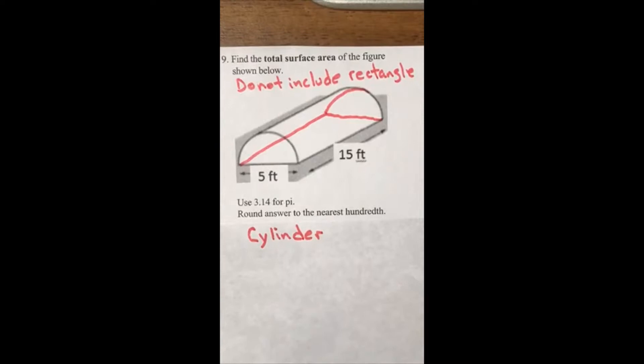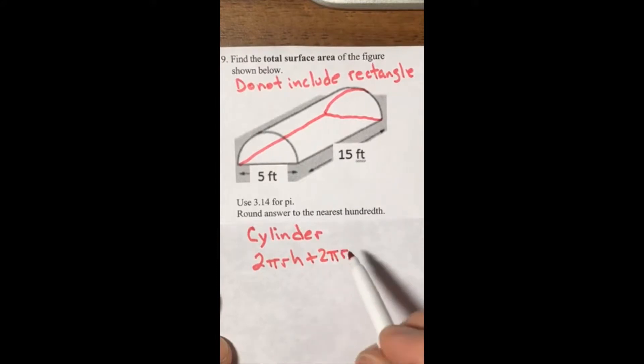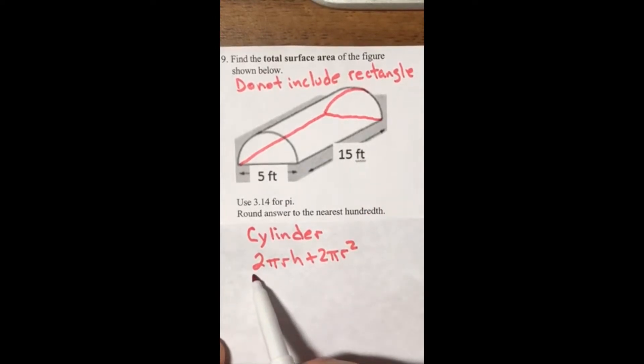And then the shape is turned on its side like this. Surface area of a cylinder is 2πrh + 2πr². And since we have to cut it in half, it's half of a cylinder, so let's go ahead and take the whole thing and divide by two. Now let's simplify this.